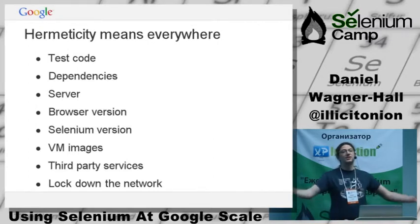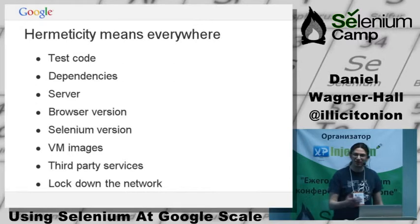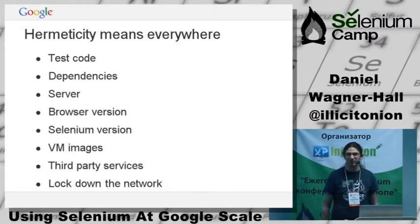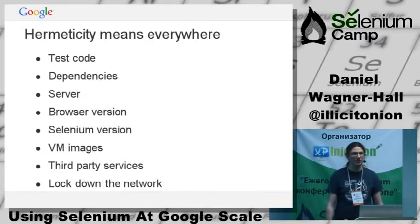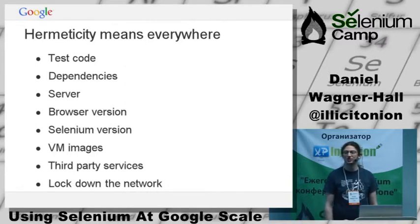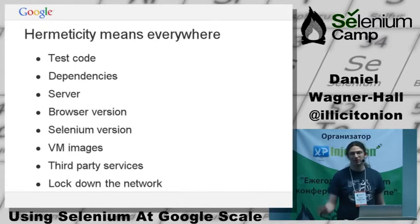Identifying every service, every file, and every computer that needs to run your test is really important. We've had tests start failing because DNS broke on the machines we were testing on — it took us three days to work out why, because someone had changed the kernel on the machines, and that isn't in source control. If it had been, I could have easily blamed the person who did it and we could have fixed it quickly. So keep as much as you can in source control.